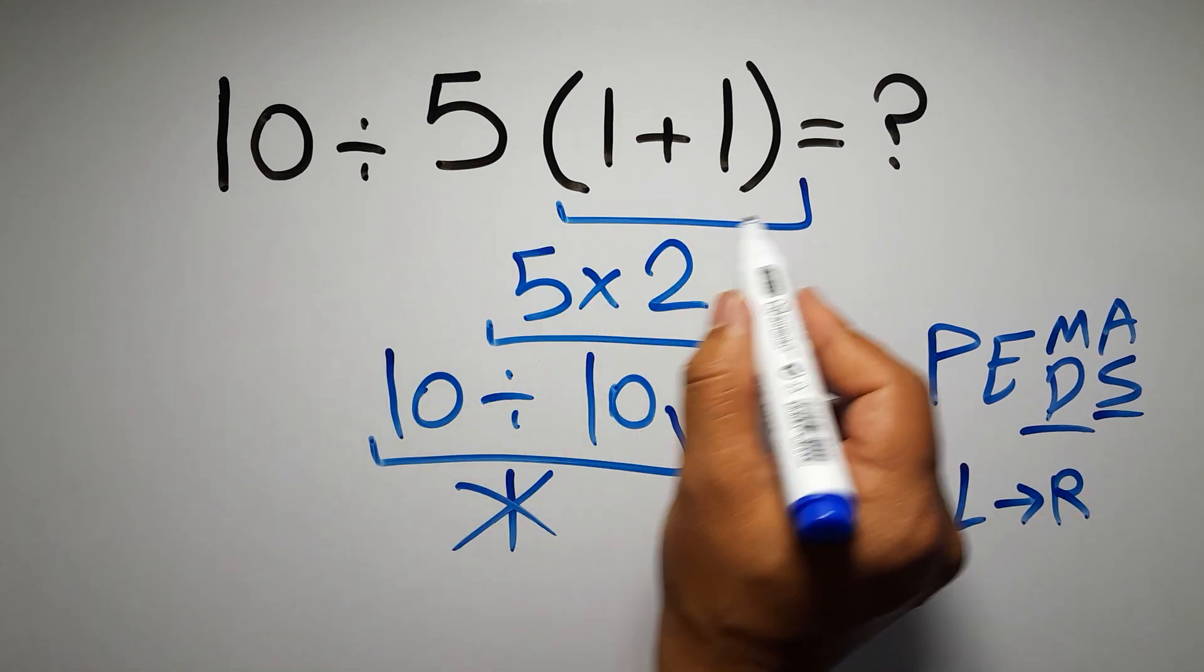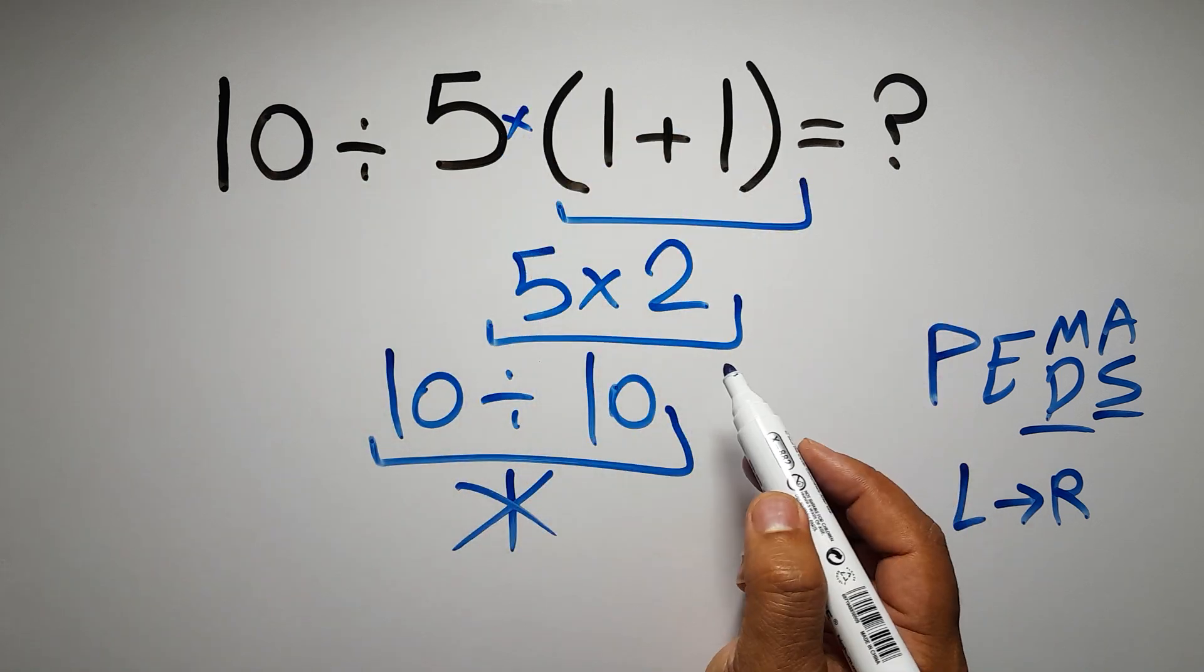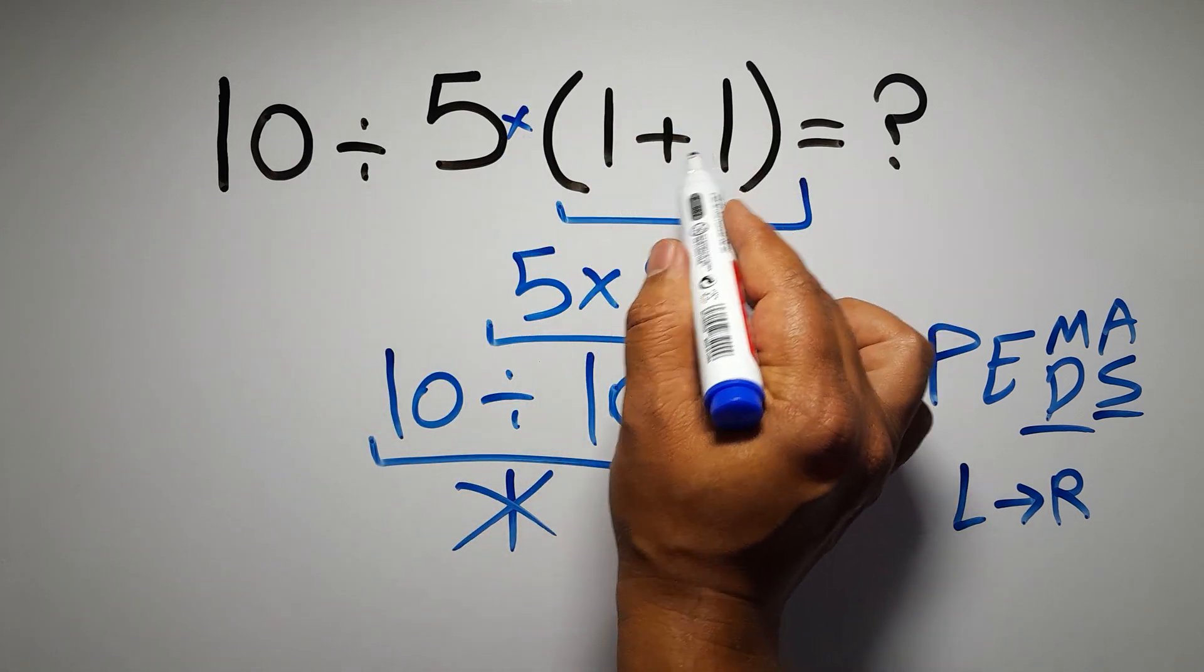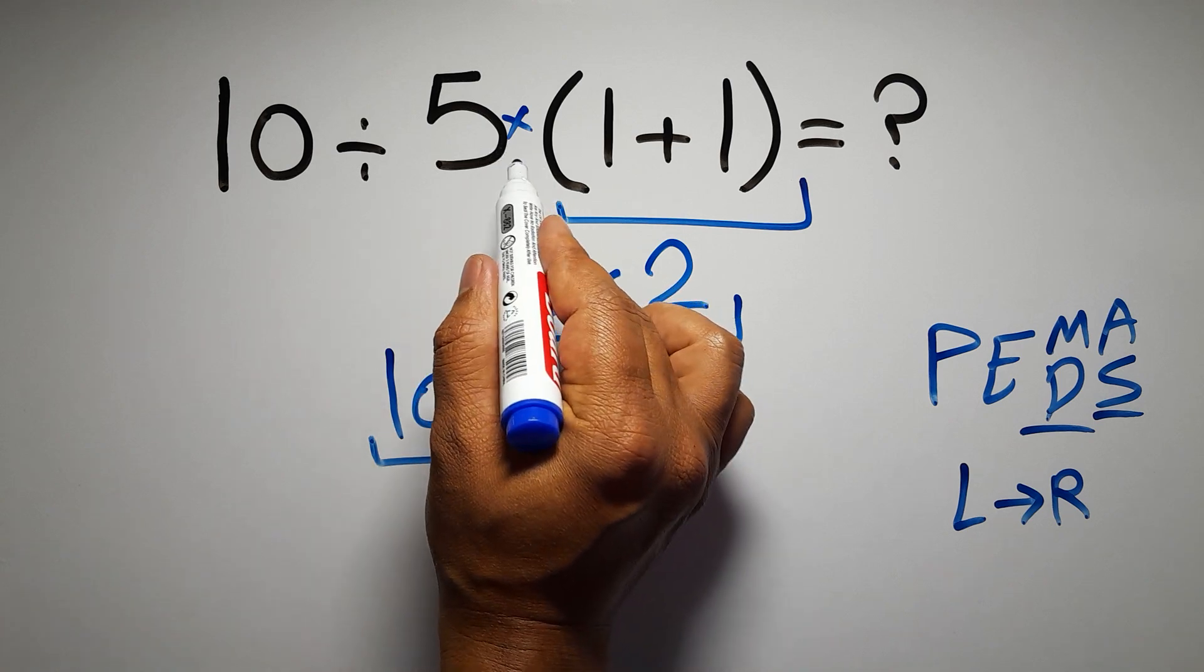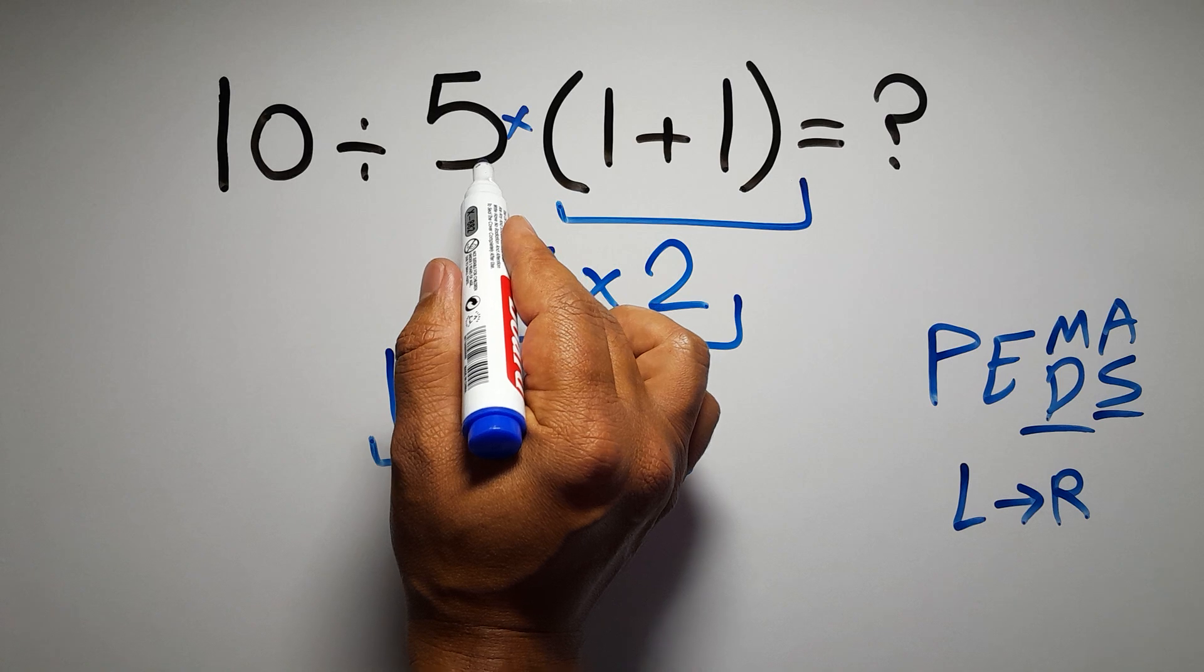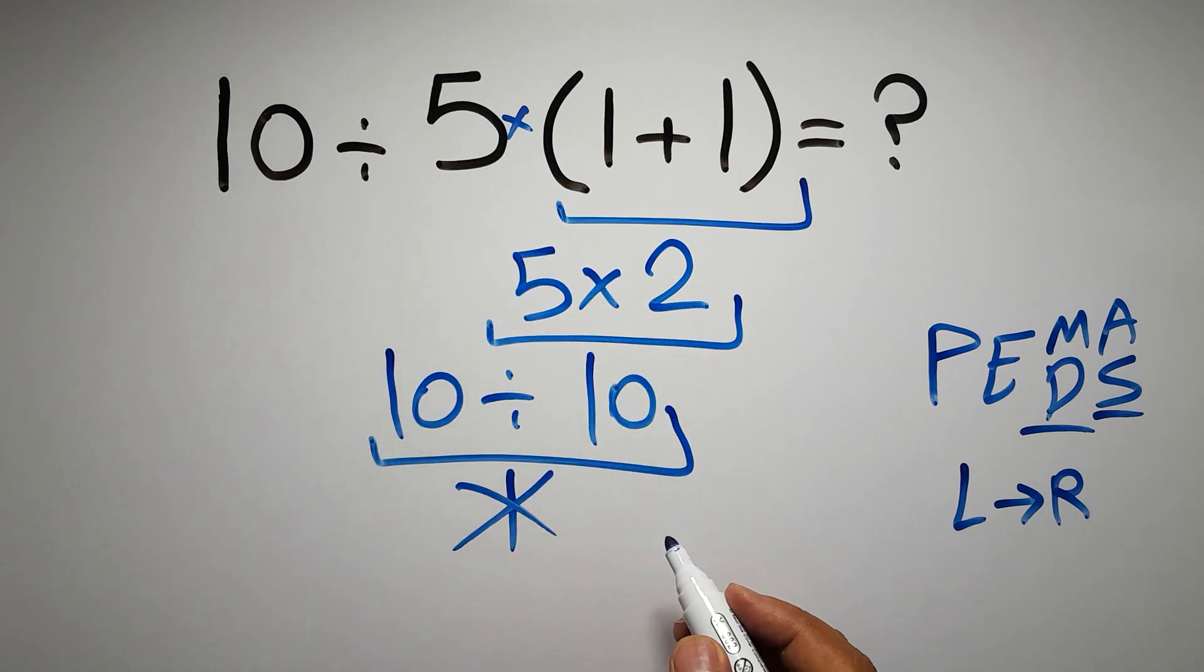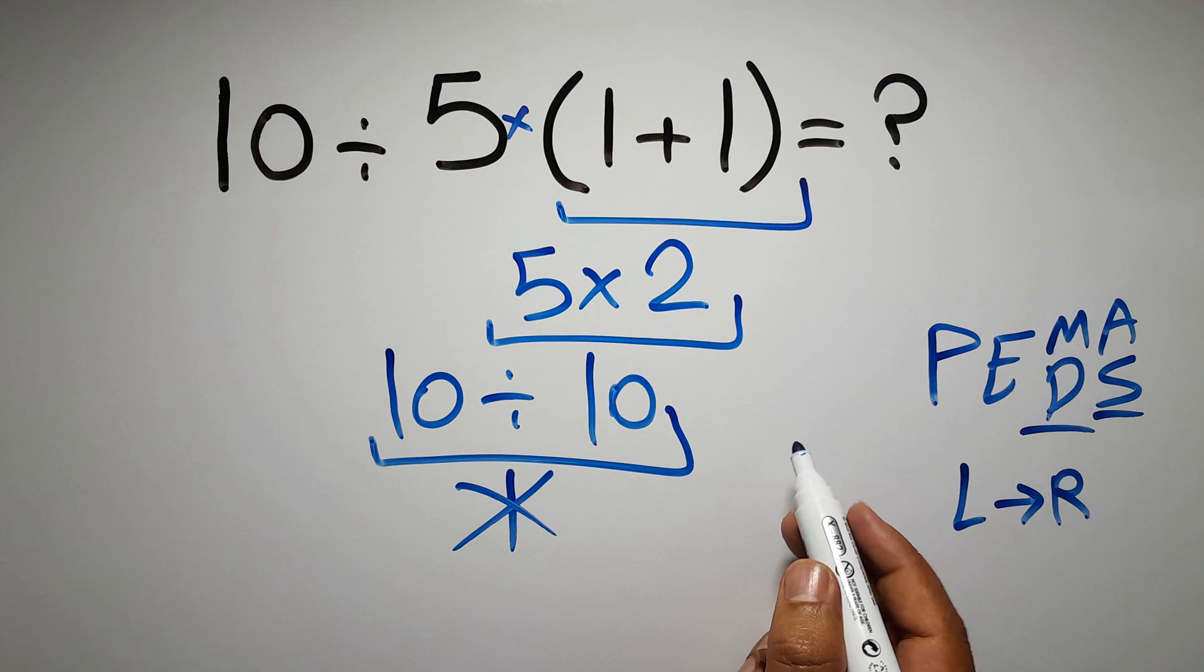In this expression we have one division, one multiplication, and one parentheses. Inside this parentheses we have one addition. Here we have a multiplication because in mathematics when a number is placed next to parentheses it means multiplication, and we usually don't write the multiplication sign for brevity.